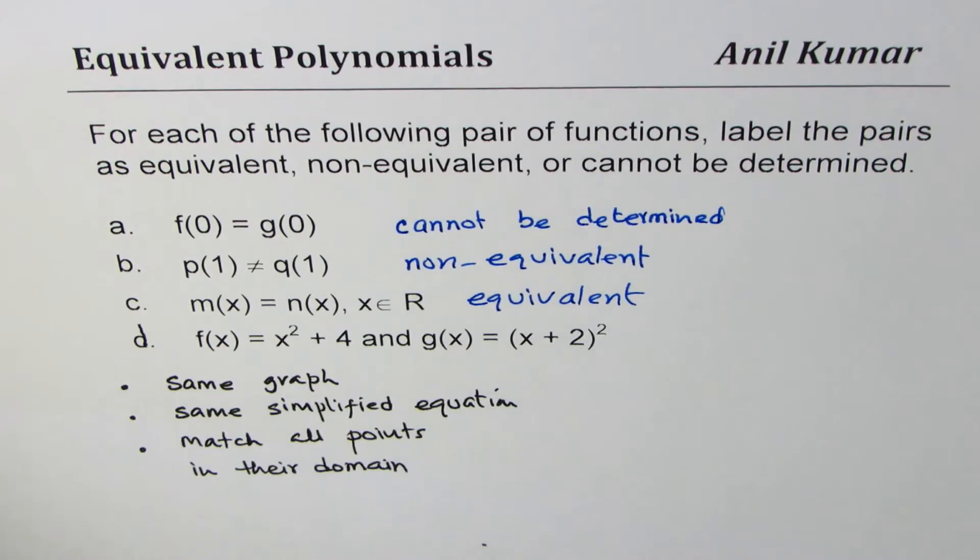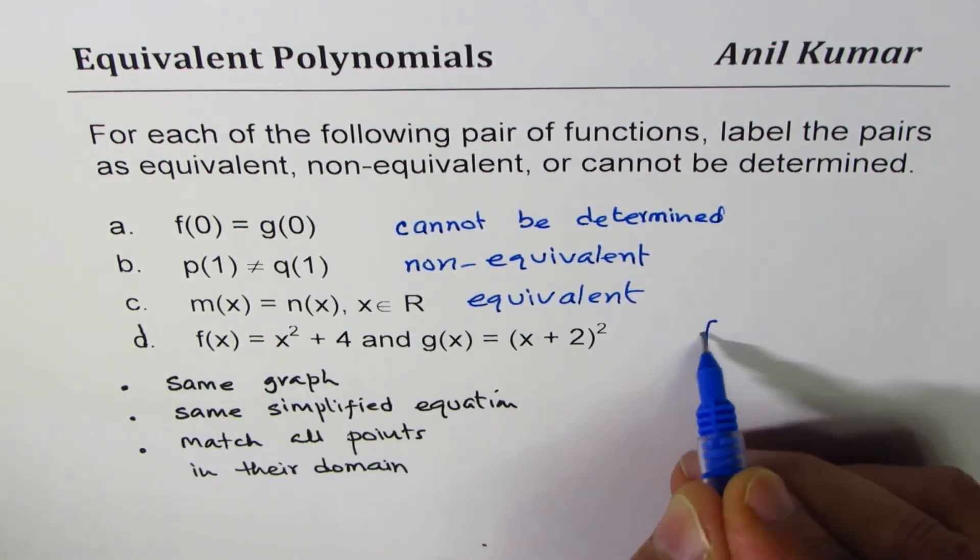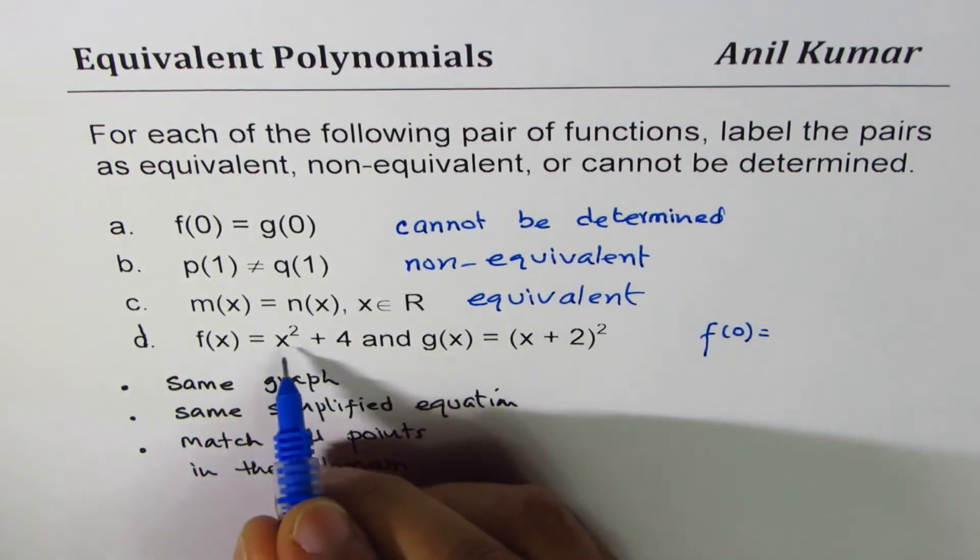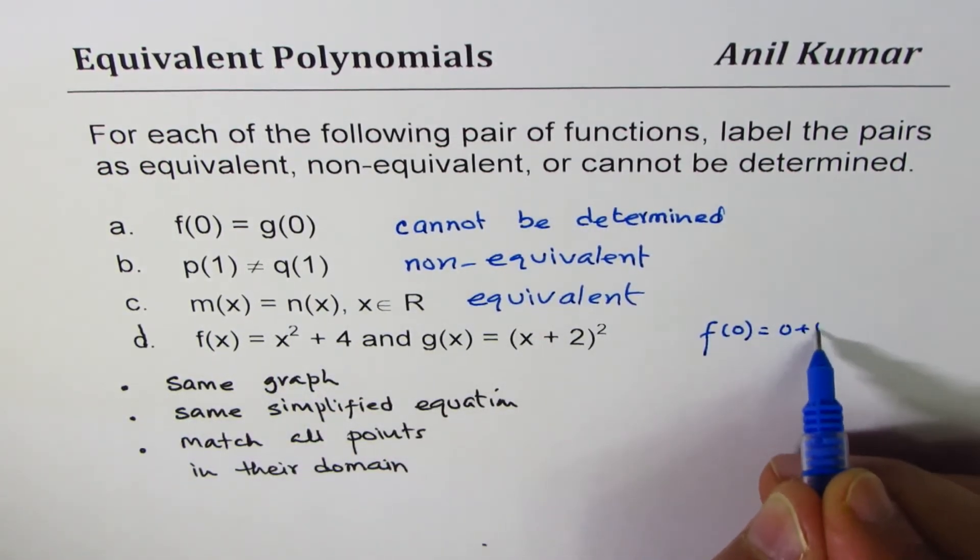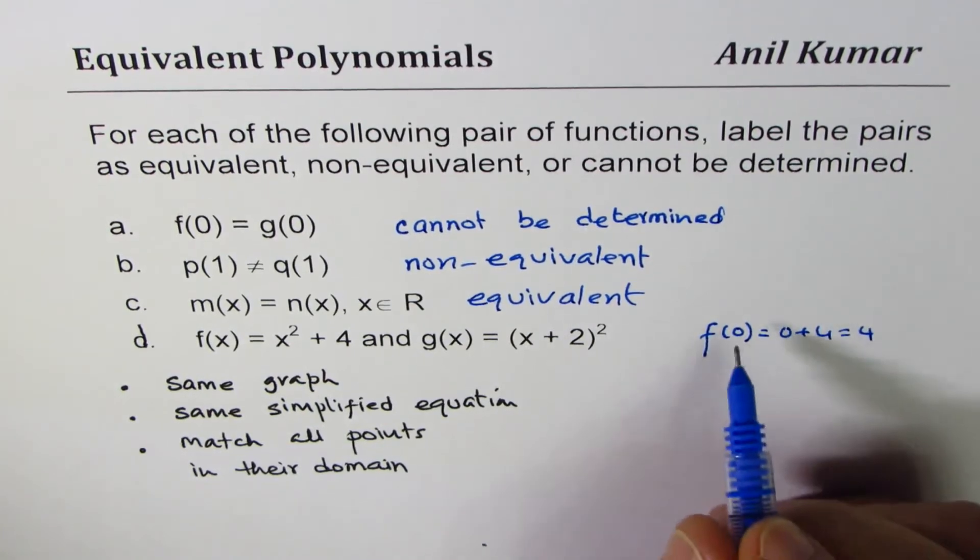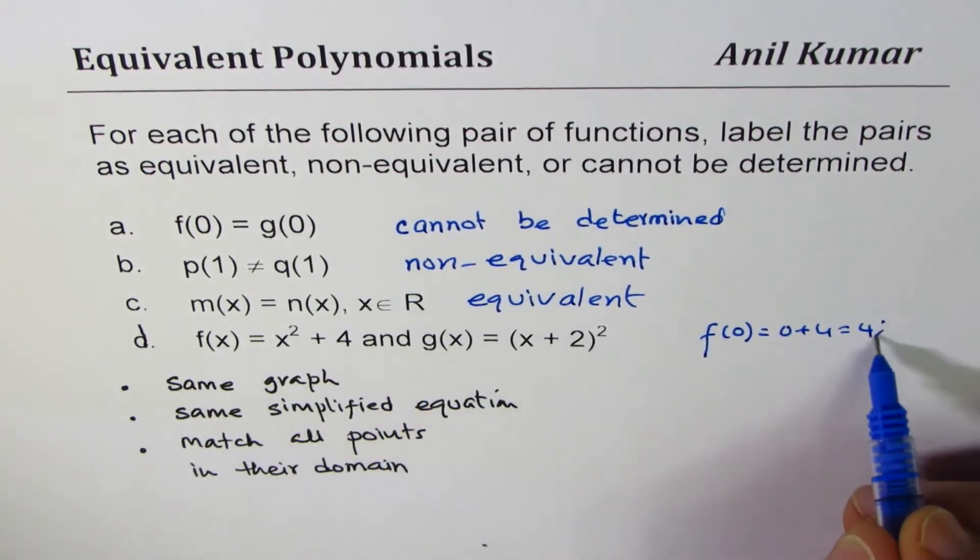Part d is f(x) equals x squared plus 4, g(x) is (x + 2) squared. Are they equivalent or not? You could do it by taking points. For example, if I choose 0, let me show you here. If I write what is f(0) equals, I get 0 plus 4, which is 4. And if I write what is g(0) equals, 0 plus 2 squared, which is also 4.